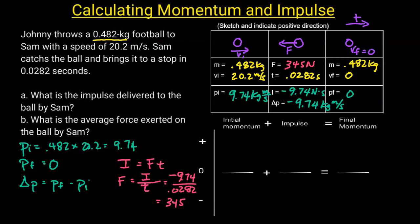From here, we can do a bar chart just to make sure we really understand what's going on in this problem. The initial momentum is 9.74 — this is just a qualitative bar chart. The impulse is negative 9.74, so I put that as a negative bar. If I combine this positive and this negative amount, I'm going to get 0 for the final momentum.